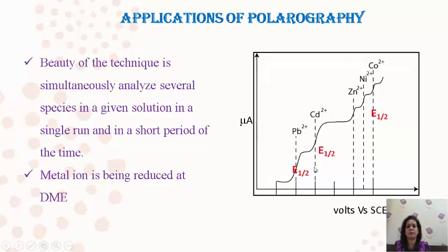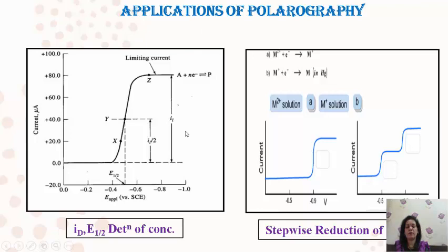For quantitative analysis, you can run any metal ionic solution under applied voltage, find out limiting current, residual current, diffusion current Id, and half of the Id current gives E½. This E½ value is useful to find out concentration of the species. If your metal gets reduced in two different stages, instead of one step you will get a two-step reaction if the metal is reduced at different potential values — stepwise reduction of metal ion can be studied using polarography.